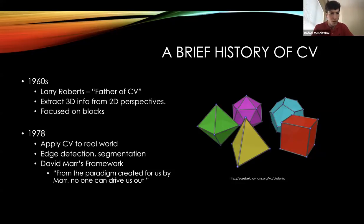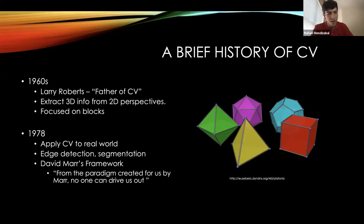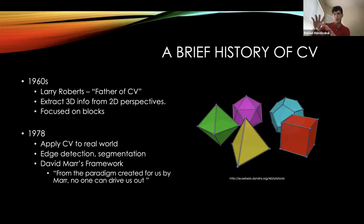Another big push in the 1970s was edge detection and segmentation. Segmentation is where you take an image and say, okay, this area is a car, this area is the road — you're able to color different things and separate them.